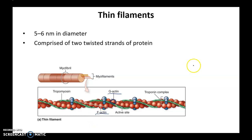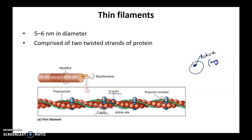If you blow up a G-actin, each G-actin has a site — you can see a black spot — and that is the active site. Later we will see how myosin heads bind to the active site. So we know what G-actin is and what F-actin is.